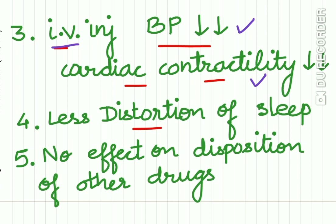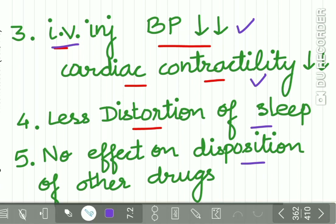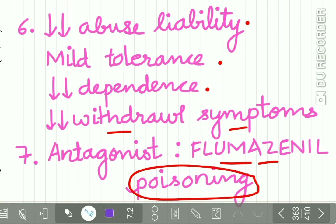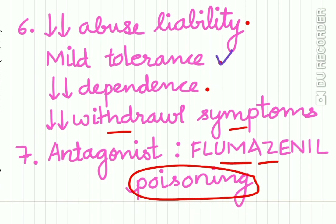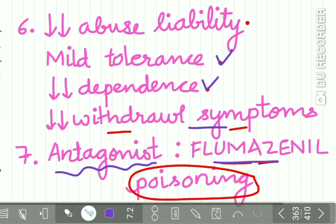Benzodiazepines cause less distortion of sleep and have no effect on the disposition of other drugs. They reduce abuse liability and produce only mild tolerance. Dependence is not prominent and withdrawal symptoms are very few. Also, the antagonist for benzodiazepine is flumazenil, which can be used for benzodiazepine poisoning.